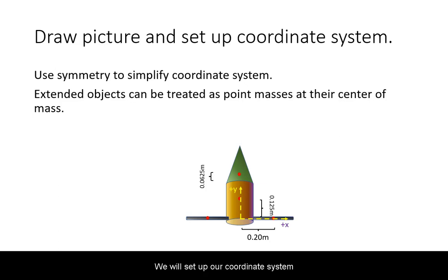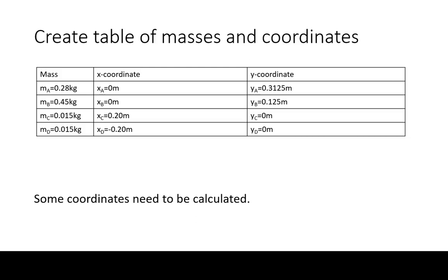We will set up our coordinate system through sensible axes of symmetry. We will place our origin at the bottom of the base of the cylinder. Next, we will fill out our table of masses and their coordinates. Double-check with your picture that you have added together the relevant coordinates where necessary.